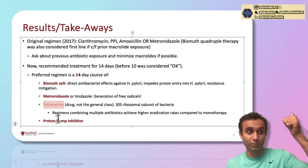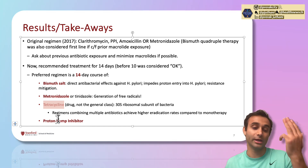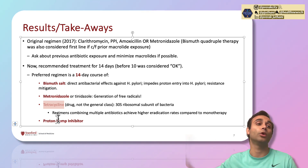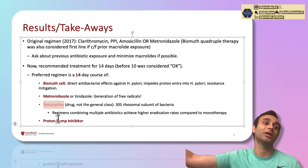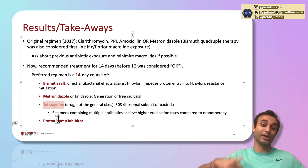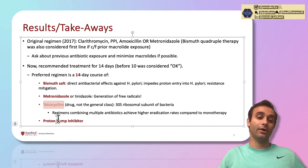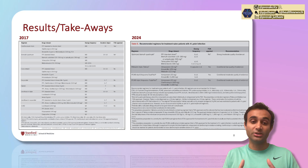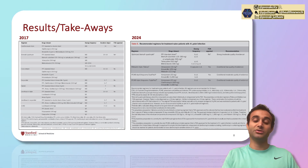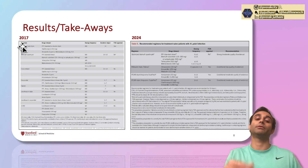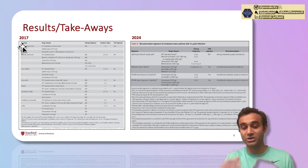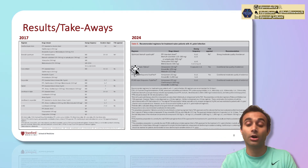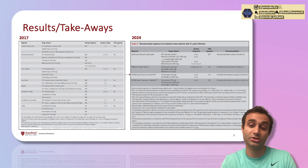So if you have a positive stool antigen, you can diagnose your patient with H. pylori, give these four drugs for 14 days, and then one month later check a repeat stool antigen test to confirm the patient has cleared the infection. With that, here are some more guidelines showing how the focus has shifted from clarithromycin-based therapy in 2017 to primarily bismuth quadruple therapy now.